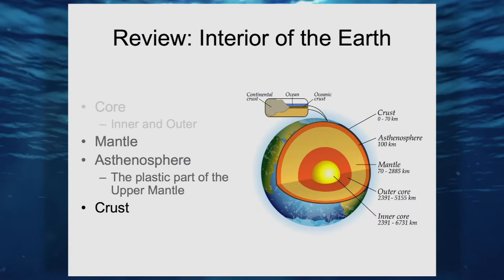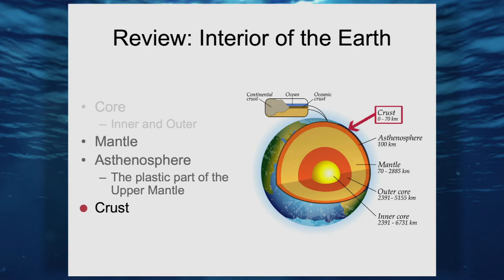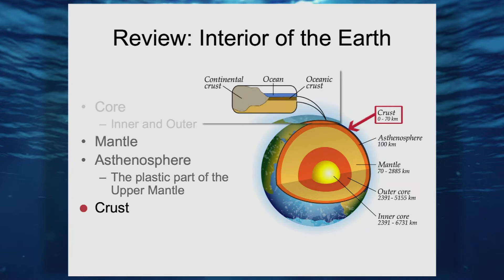Continuing out, we get to the asthenosphere, which can be plastic — not quite liquid, but not quite solid — it can deform very slowly. And then finally there is the Earth's crust, which is where we are. It's the outermost part of the Earth. This insert shows that Earth's crust can be divided generally into two types, which I'll cover on the next slide.